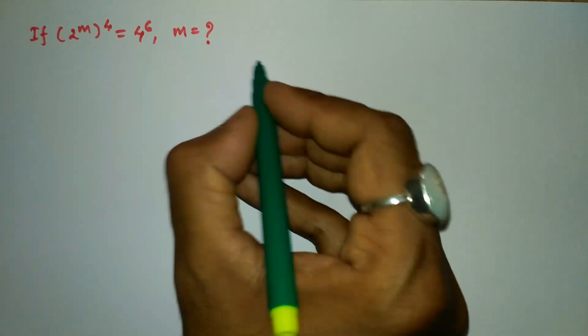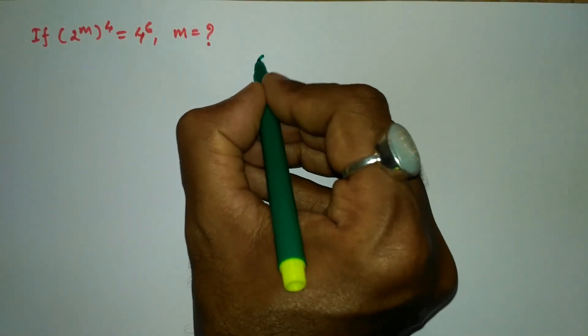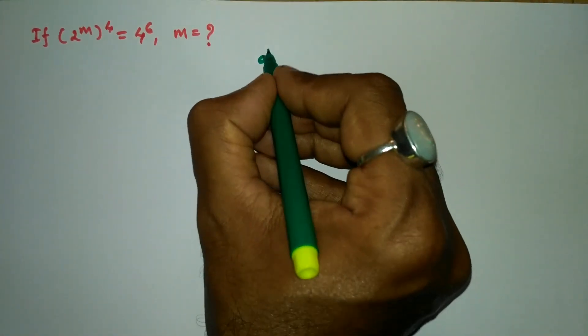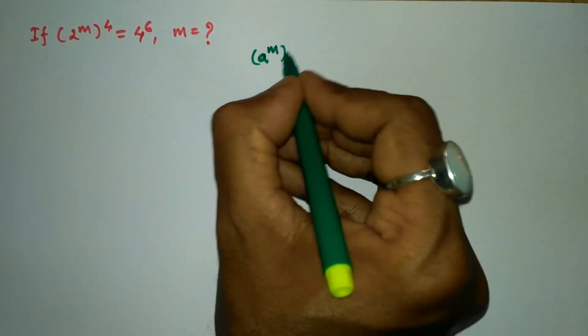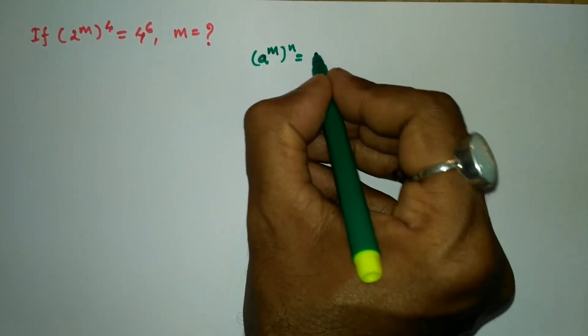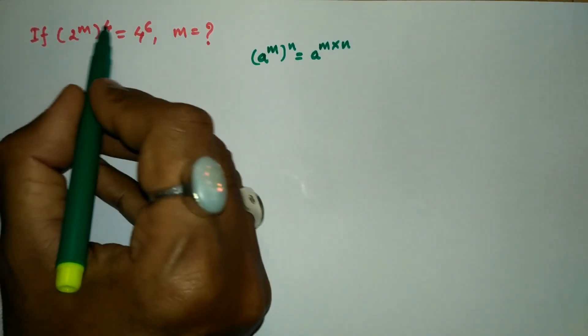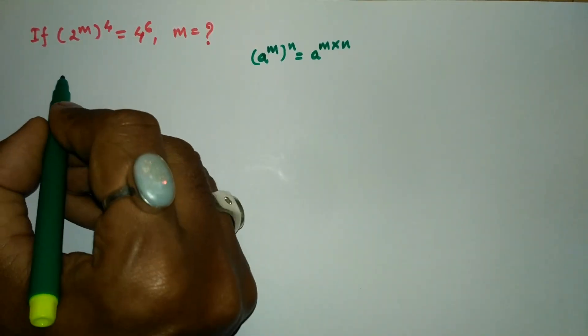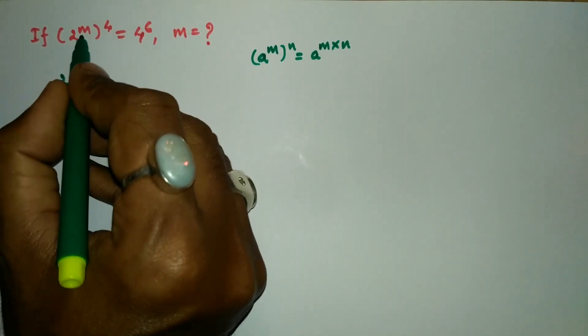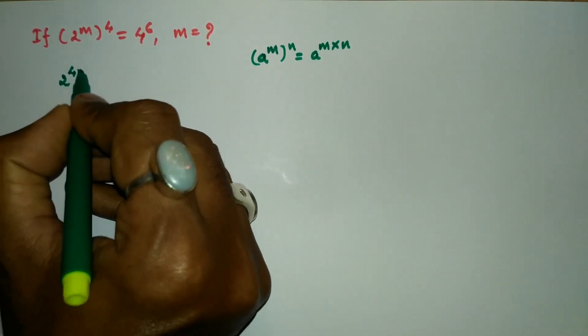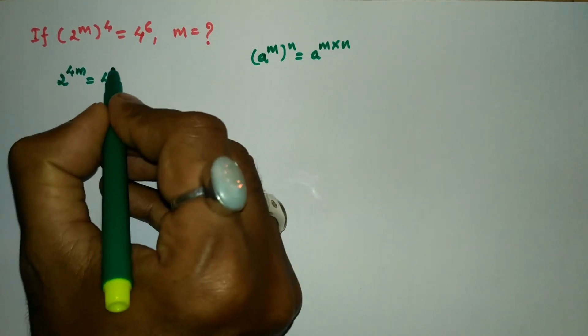As per one of the laws of exponents, (a^m)^n can be written as a^(m×n). So here we can multiply both of these. Let us write 2^(4m) equals 4^6.